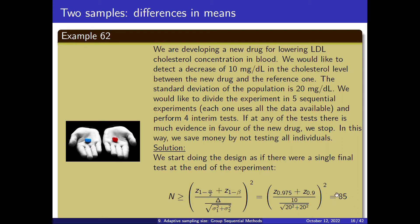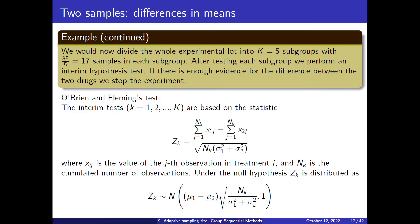We would need in total 85 individuals. Now we divide these 85 individuals into five stages, so in each one of the stages we will use 17 samples. After each one of the subgroups, we will perform an interim hypothesis test, and if there is enough evidence for the difference, we will stop.